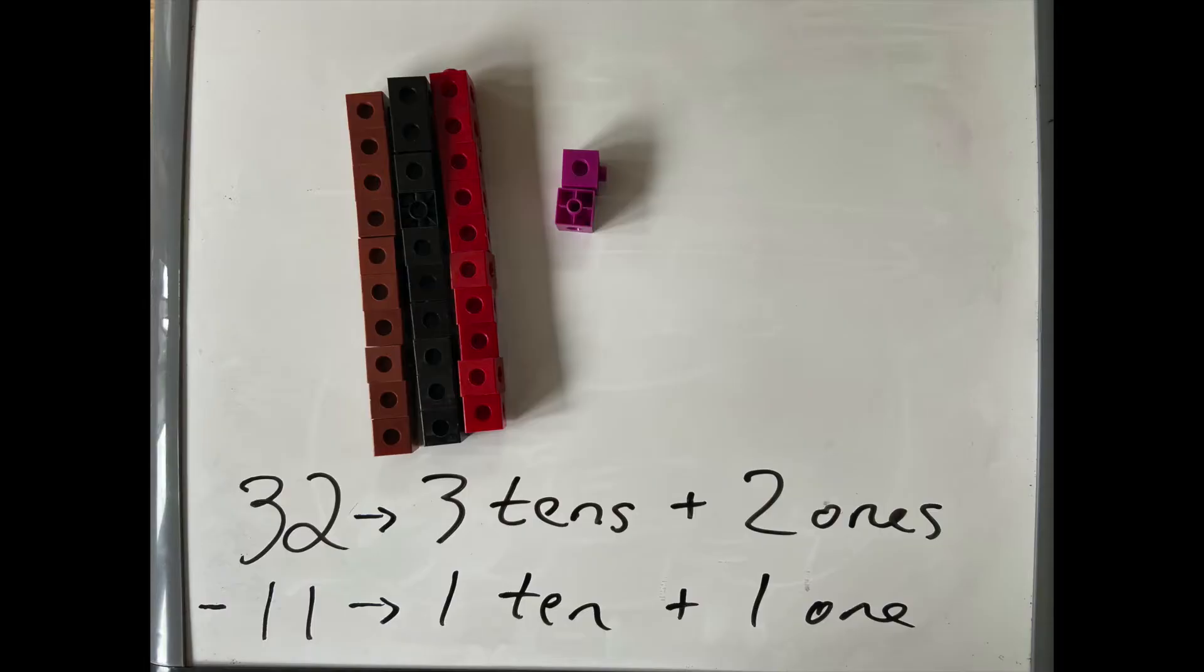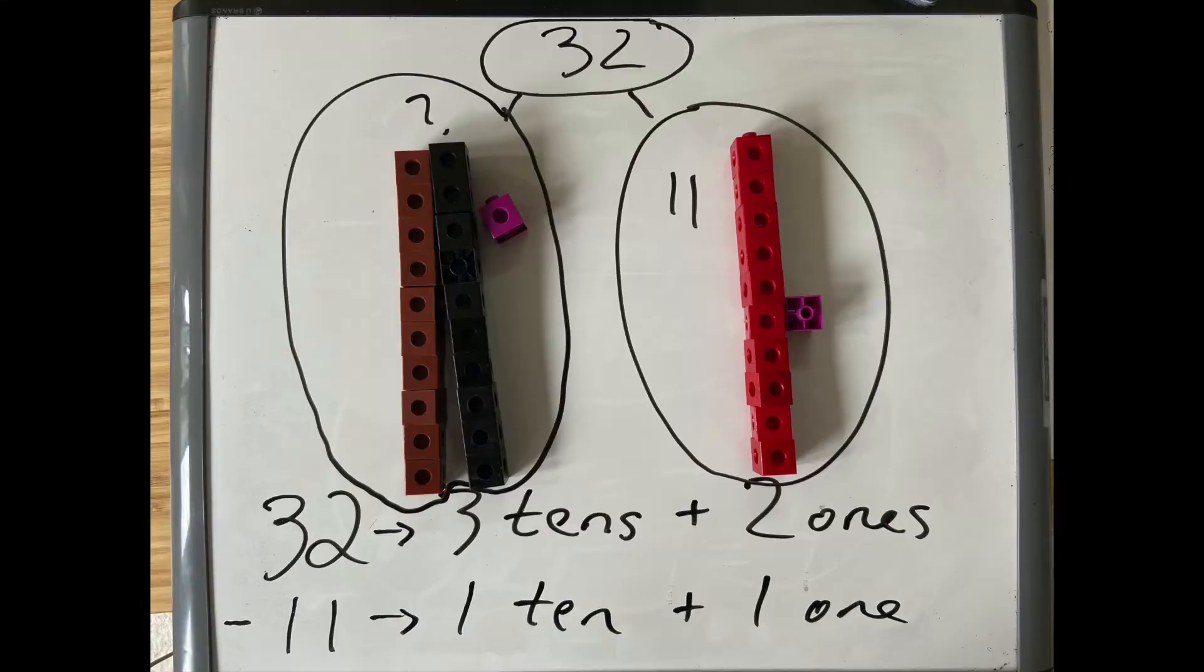We say, oh, I've got these three tens. I'll take away one ten. I have two tens left. Great. I have two ones. I want to take away one one. I have one one left. Great.